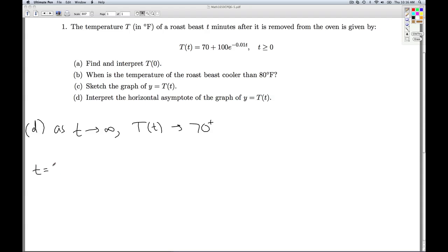If I think of t being equal to a billion, and I plug a billion in to the function, just like we did in behavior for rational functions, you get 70 plus 100 e to the negative 0.01 times a billion. So this would be 70 plus 100 e, and this would be a big negative up here.